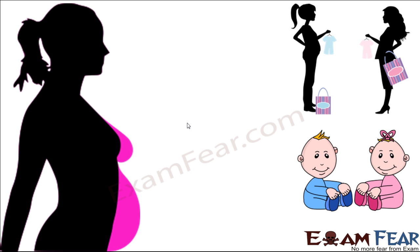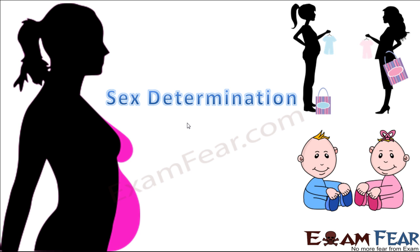Now how a woman gets pregnant is clear to us. It happens when the sperm is able to fertilize the egg within 24 hours of ovulation — that is when a woman can become pregnant. Now the question is, during this process of fertilization, what is that special thing which decides that the child is going to be a baby boy or a baby girl? So let us talk about sex determination — what determines the sex of the child?